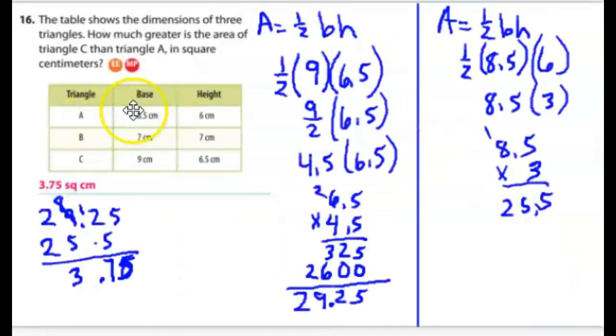For the next one, we have a table. It shows the dimensions of three triangles. How much greater is the area of C than the area of A? So we don't even care about B. We want to figure out the area of C, and it tells us the base and height, and the area of A. Okay, so I've made my two different work areas here. I wrote on the top of each one the formula A equals one-half base times height for both of them.